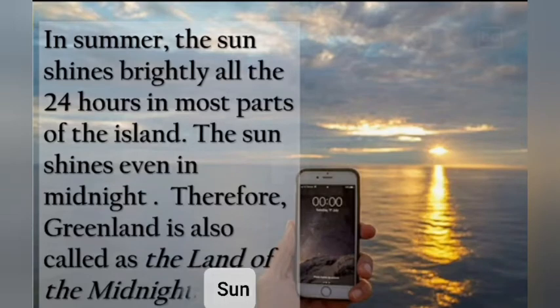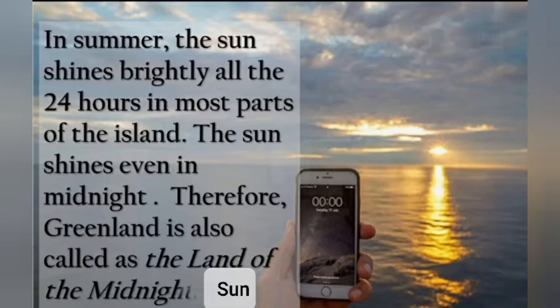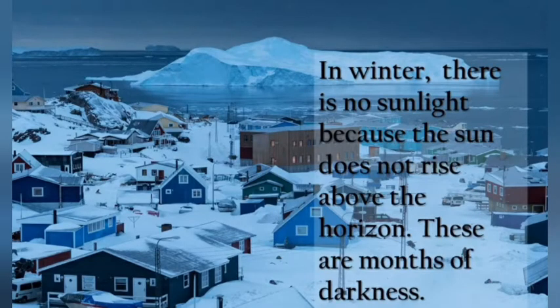Greenland is also called the land of the midnight sun. In summer, the sun shines brightly all 24 hours in most parts of the island — even at midnight — which is why it has this name. In winter, however, there is no sunlight because the sun doesn't rise above the horizon. These are called the months of darkness.